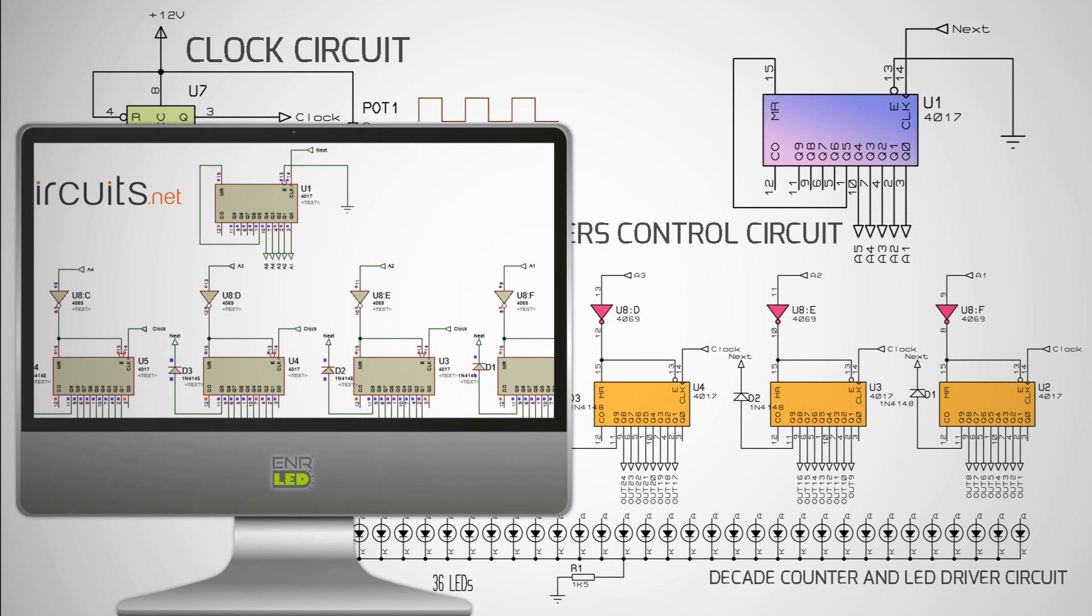The Q5 output of U1 4017 goes to logic 1, and U1 is reset. Then it continues to count again and to activate the 4017s of the LEDs in sequence.